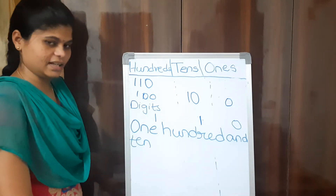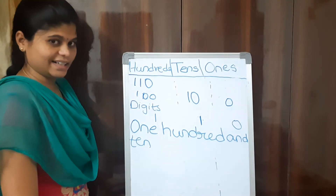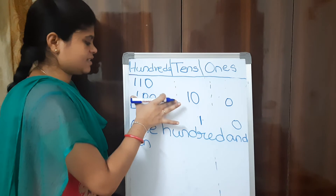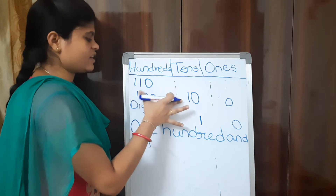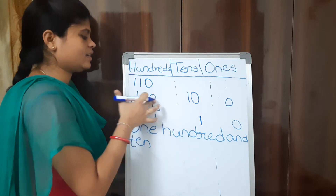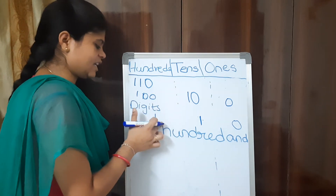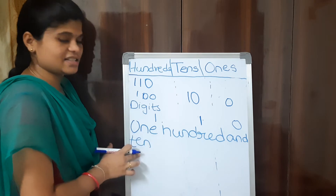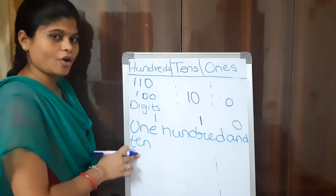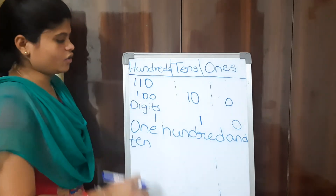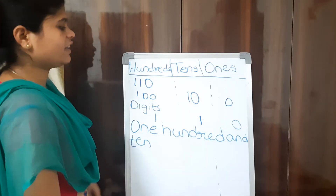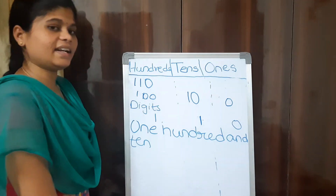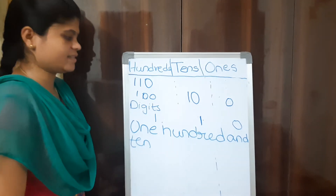The number name of 110 is one hundred and ten. This is writing 110 in place values, this is writing 110 in digits, and this is the number name of 110. After 110, like this, we can write all numbers till 199.